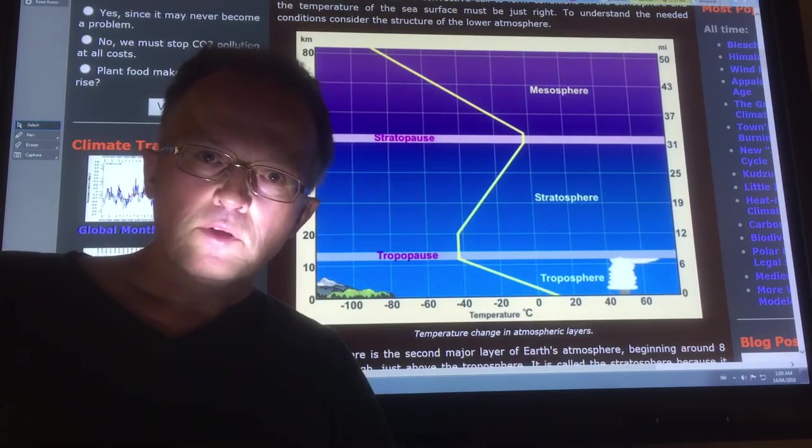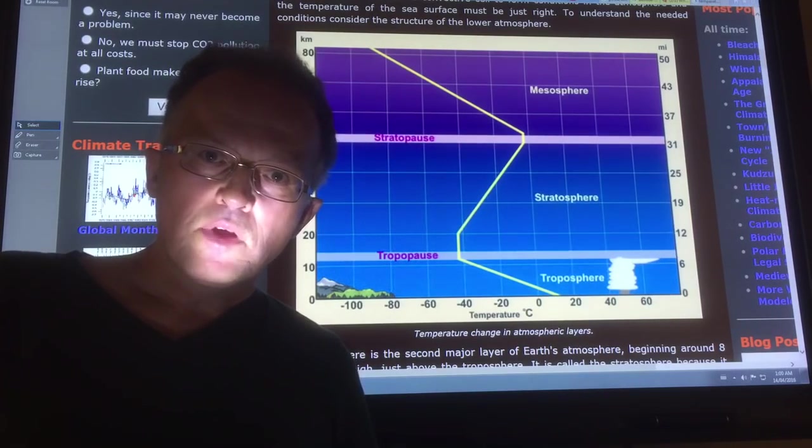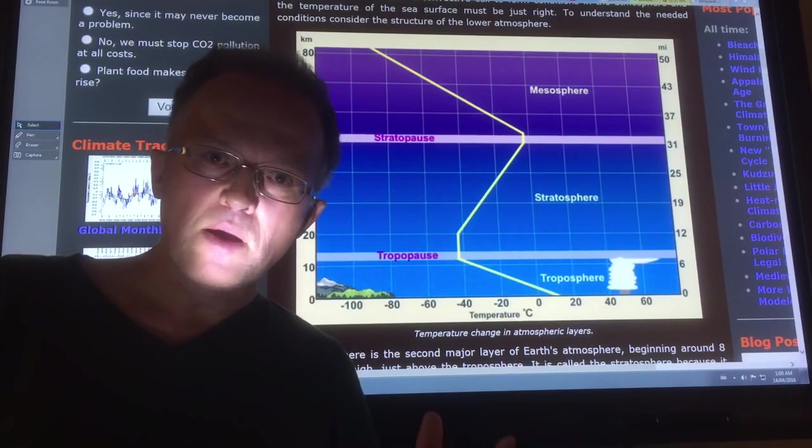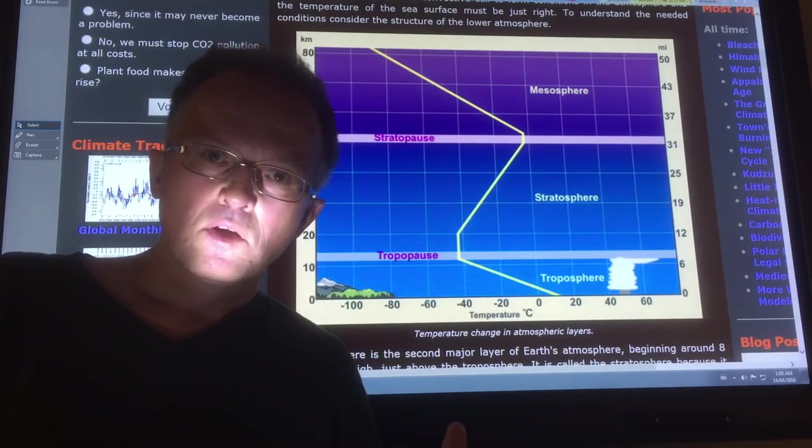Basically chemtrails don't exist. What you're seeing is contrails. The chemistry of the atmosphere has changed. The physical properties of the lower and upper atmosphere have changed. So the vapor that comes out of commercial aircraft jet engines behaves quite differently.